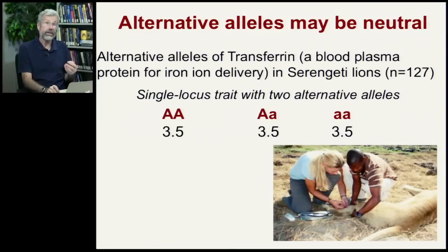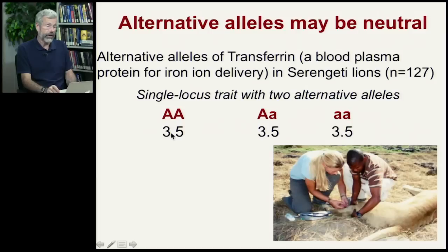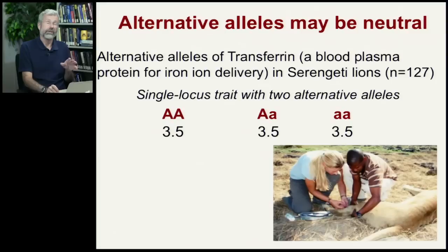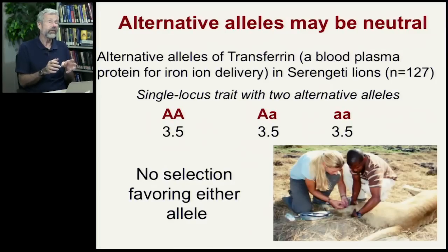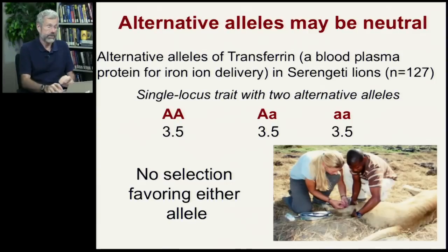When we look at the surviving offspring of individuals with each genotype — the three possible genotypes: homozygote dominant, heterozygote, and homozygote recessive — the average number of offspring found in 127 lions tested showed that homozygotes had three and a half surviving offspring, and so did the heterozygotes, and so did the recessives. There's actually no selective advantage of one allele over the other — they're selectively neutral. When there's no selection favoring either allele, there's nothing pushing one allele to become more common at the expense of the other.